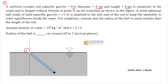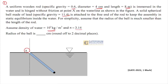A solid spherical ball made of lead with specific gravity 11.4 is attached to the free end of the rod to keep the assembly in static equilibrium inside the water. For simplicity, assuming the radius of the ball is much smaller than the length of the rod, assuming water density as 10³ kg/m³, find the radius of the ball in centimeters.